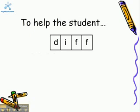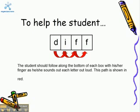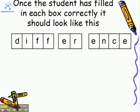To help the student, they should follow along the bottom of each box with his or her finger as he or she sounds out each letter out loud. This path is shown in red. Once the student has filled in each box correctly, it should look something like this.